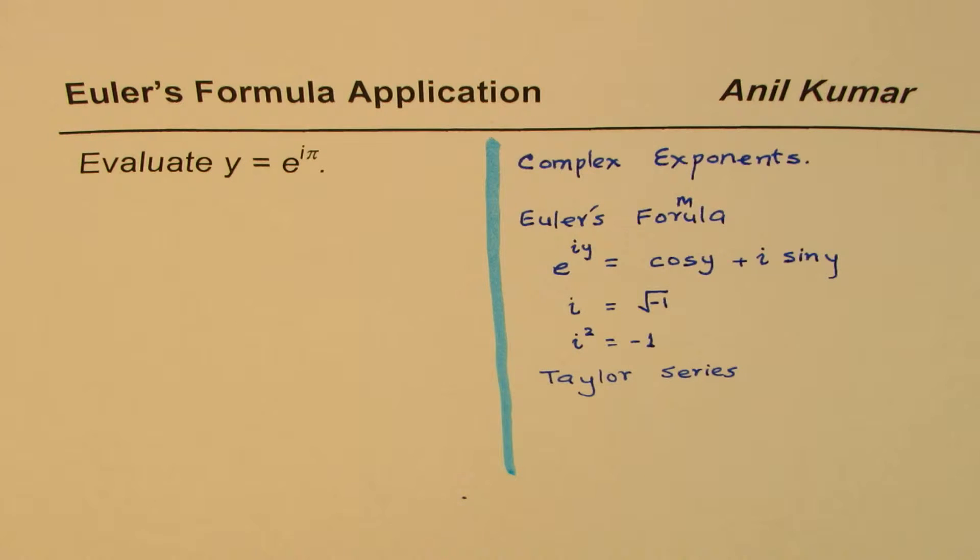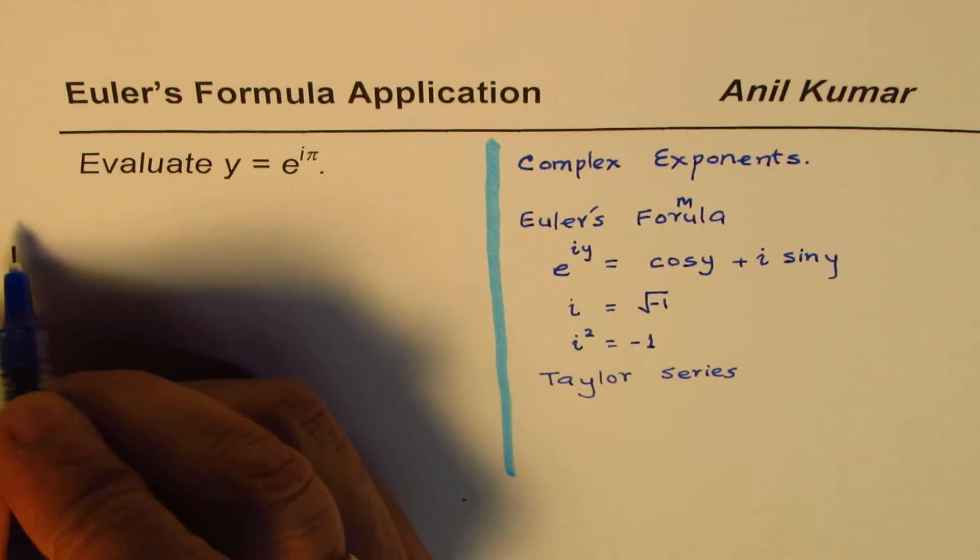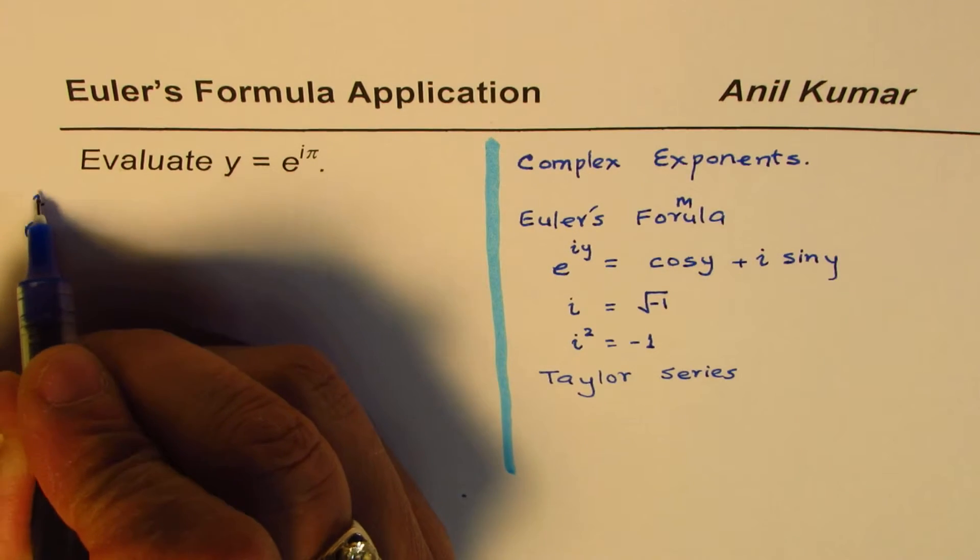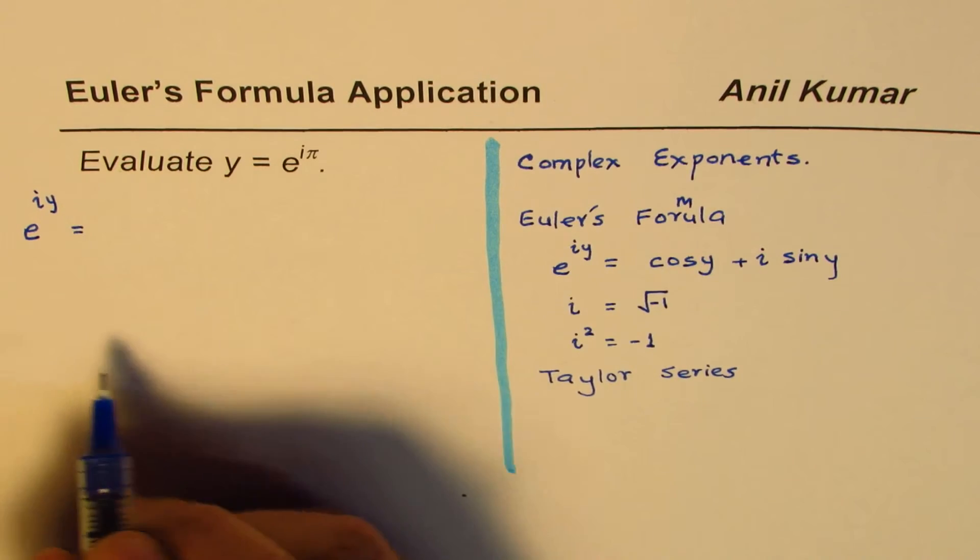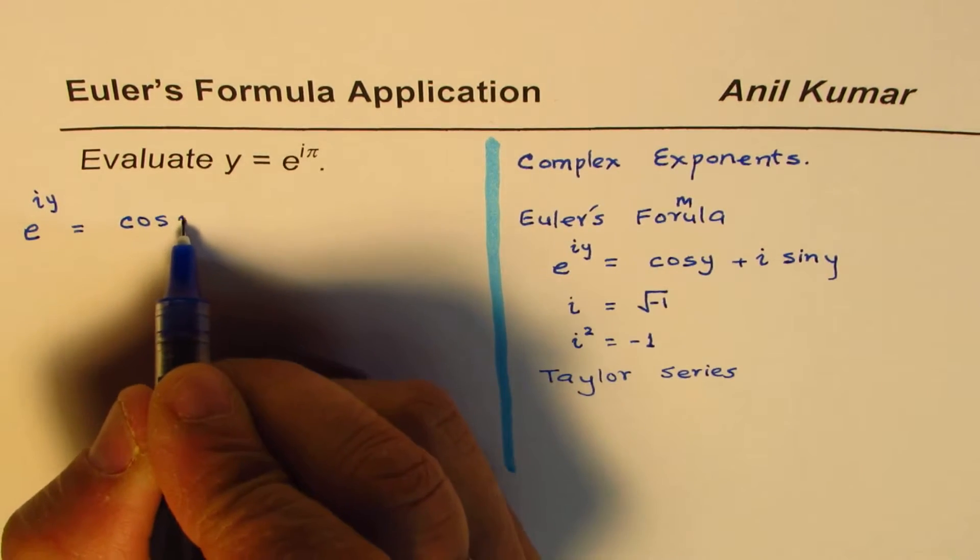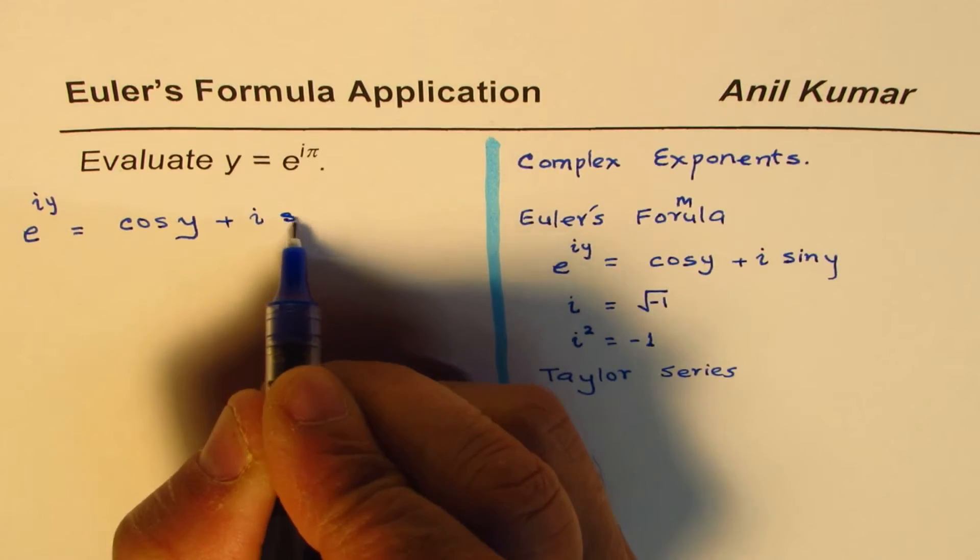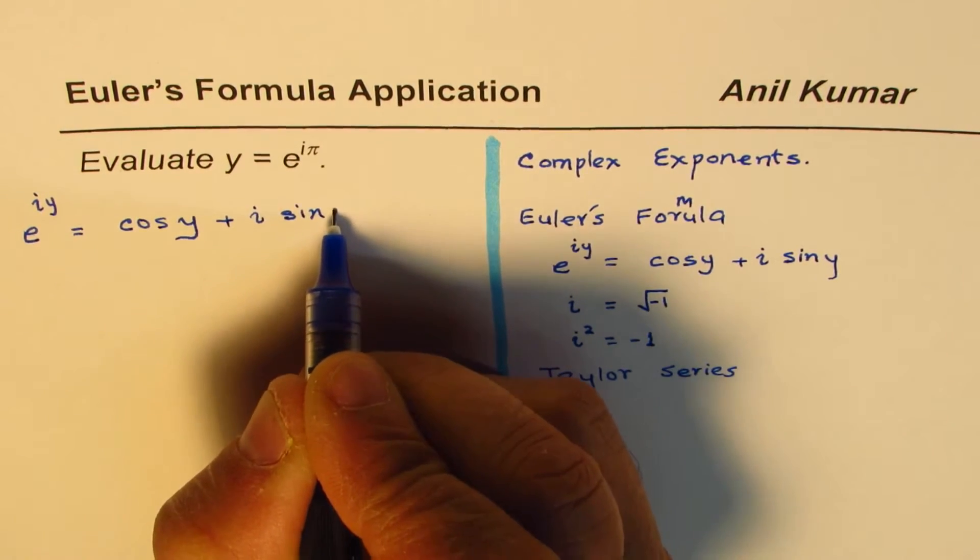It is indeed a very important result, and therefore I didn't want to keep it pending. So the formula here is e to the power of i y is equal to cos y plus i sine y.